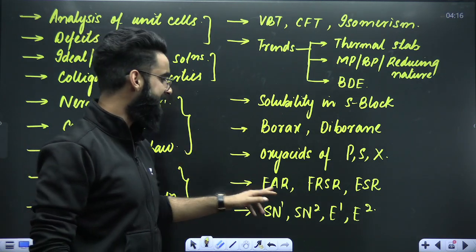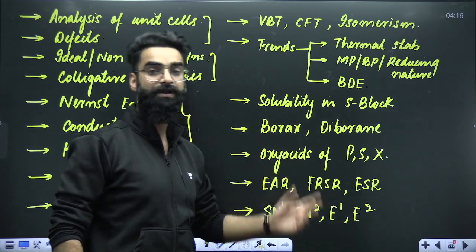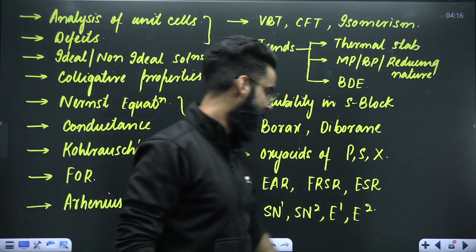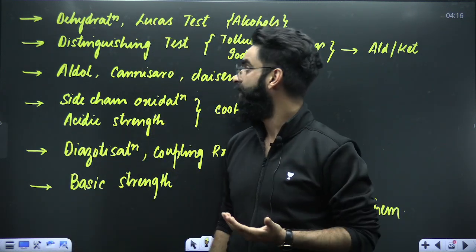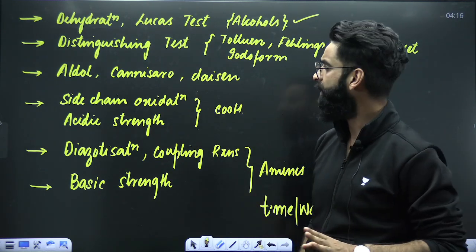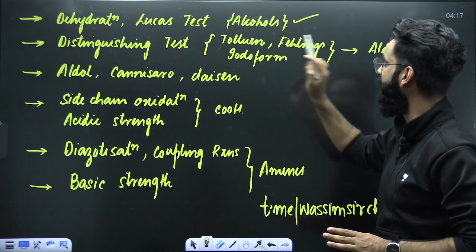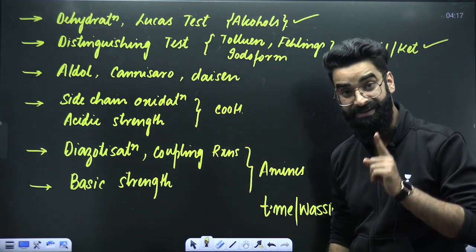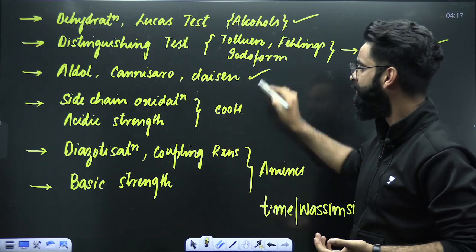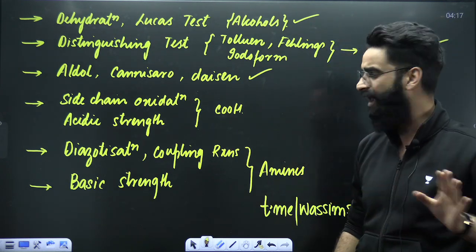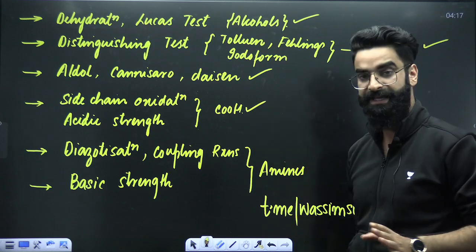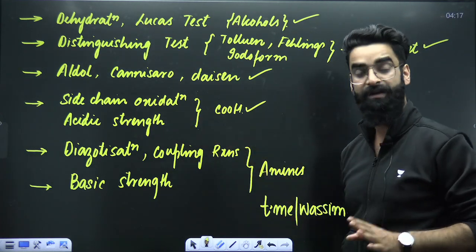For organic reactions from alkanes, alkenes, and arenes — cover EAR, FRSr, ESR, SN1, SN2, E1, and E2 from alkyl halides. From the chapter alcohols, do not skip dehydration and Lucas test. From aldehydes and ketones, the distinguishing tests involve Tollens', Fehling's, and Iodoform reactions. Also important are reactions like Aldol, Cannizzaro, and Claisen condensation — questions have been asked on these almost everywhere. From carboxylic acids, cover side chain oxidation and acidic strength.